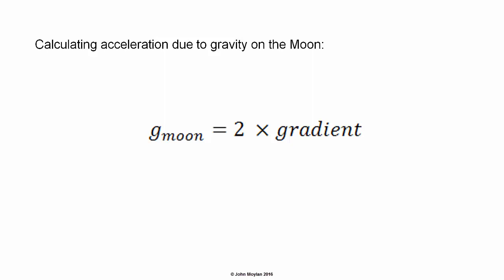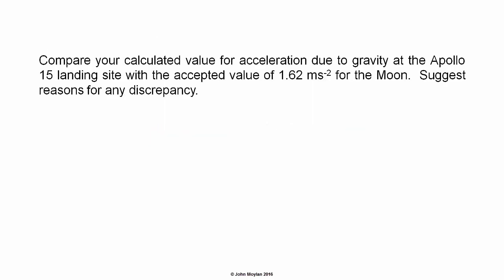To calculate the value of acceleration due to gravity on the surface of the Moon, simply multiply your gradient by two, and then compare your calculated value for acceleration due to gravity at the Apollo 15 landing site with the accepted value of 1.62 meters per second squared for the Moon.